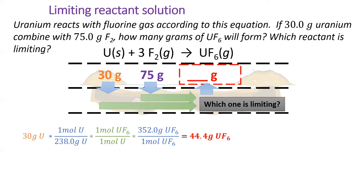From 30 grams of uranium, we can make 44.4 grams of uranium hexafluoride.